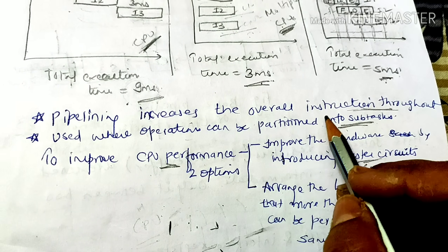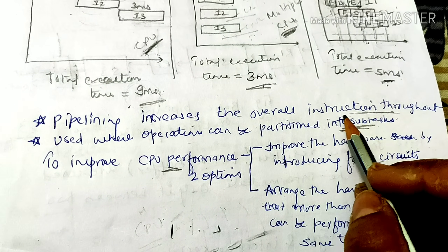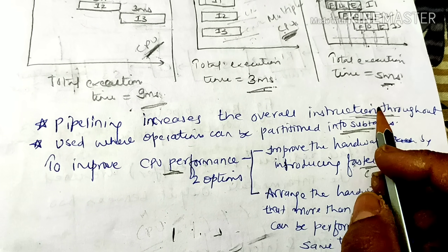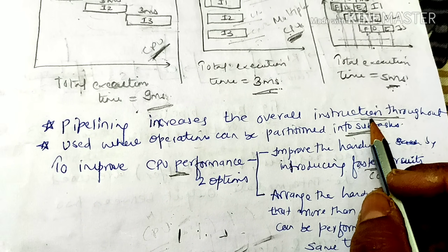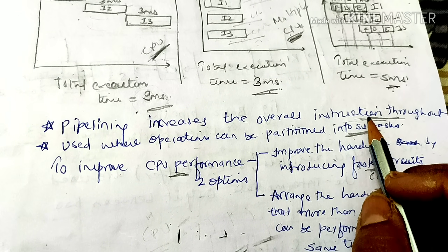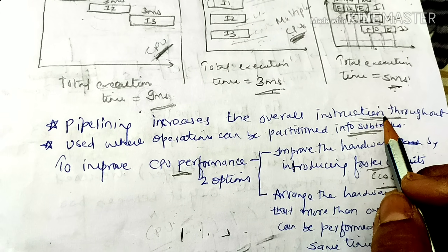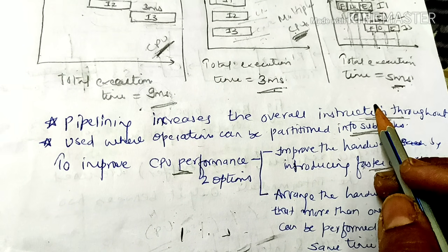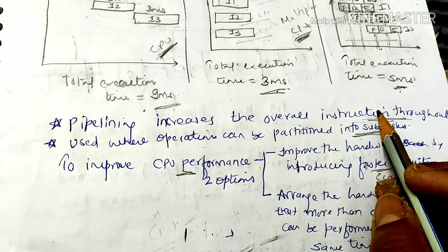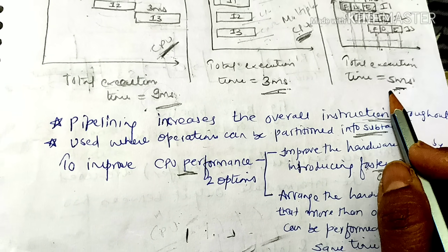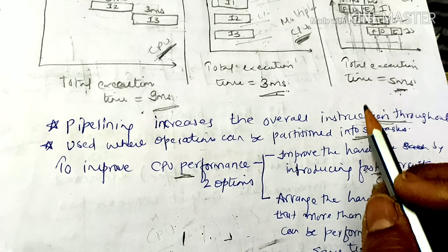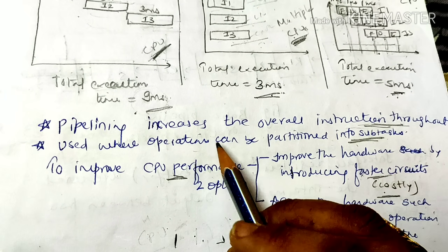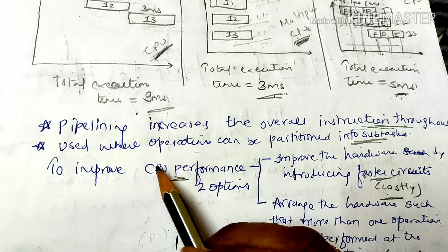So, what is pipelining? Pipelining increases the overall instruction throughput. The number of instructions executed per unit time will be increased. So, in less time, we can execute more instructions with the help of pipelining.